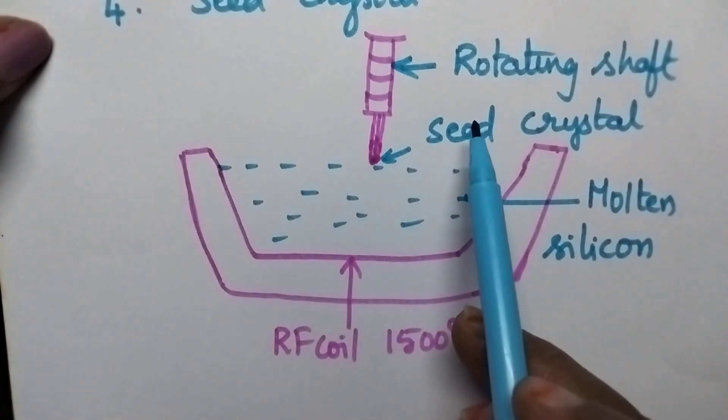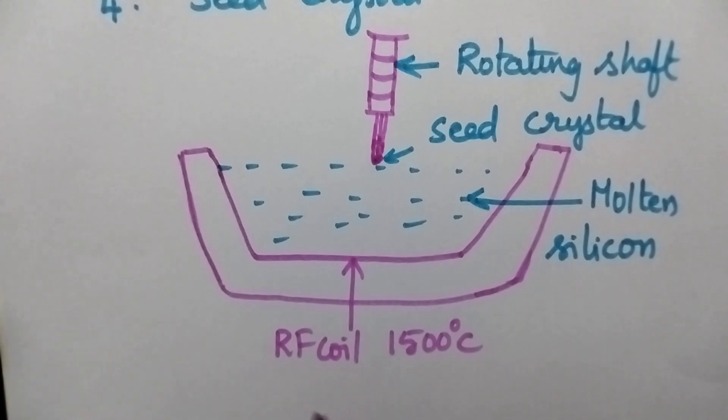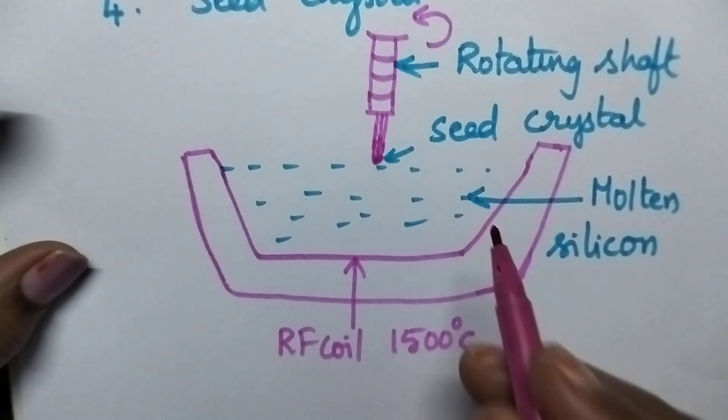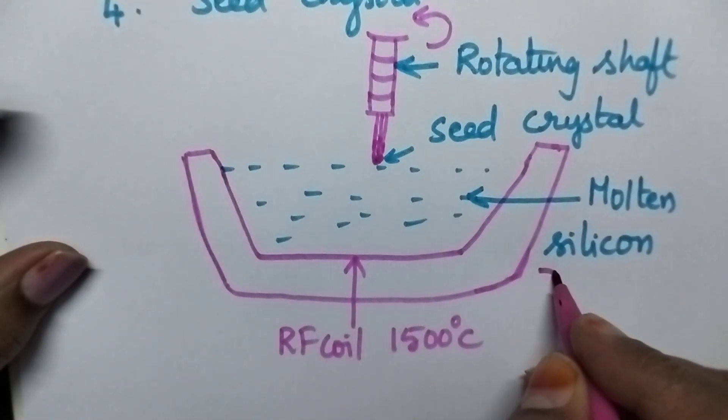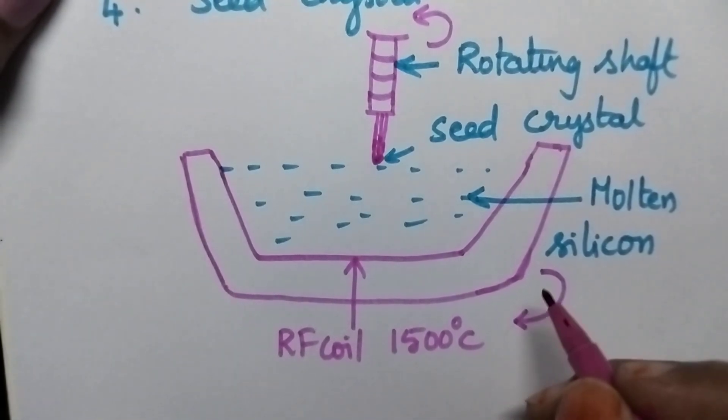At this moment, the rotating shaft which is capable of rotating in anti-clockwise direction is slowly lowered, and always remember, the crucible is capable of rotating in the clockwise direction.